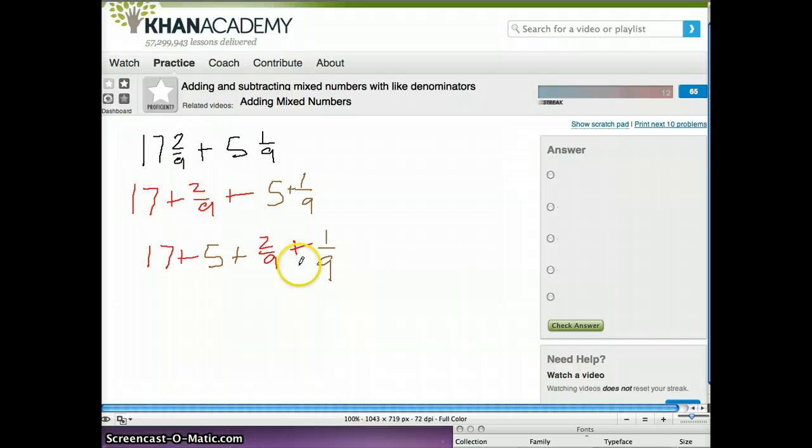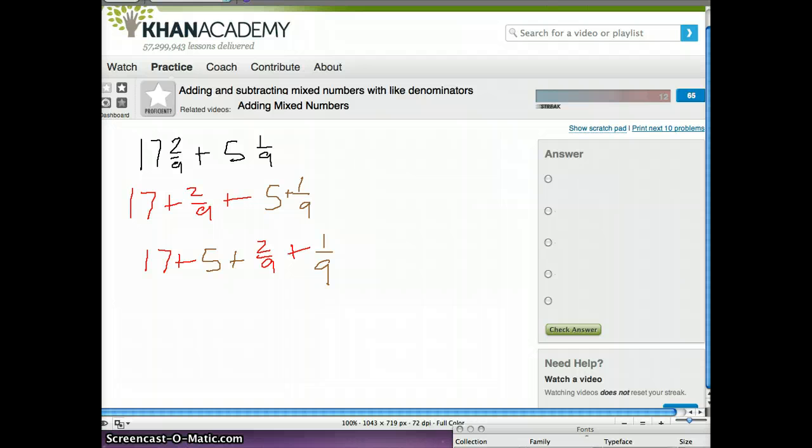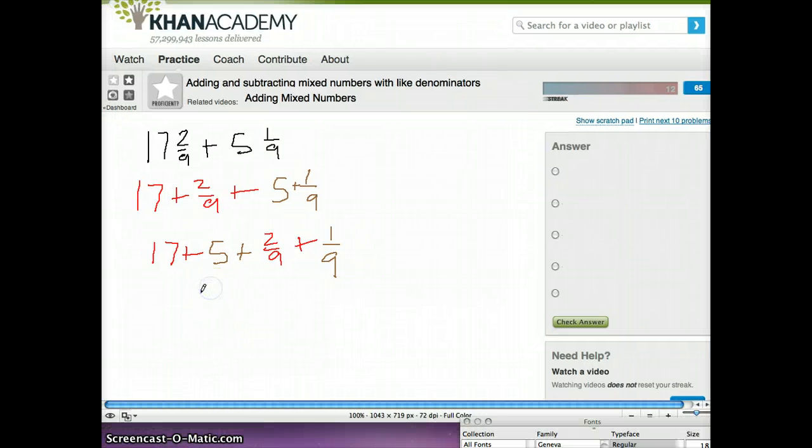And then you would just literally add it up. So you would, let me see if I can go back to black, say that is equal to 22 plus 3 ninths.